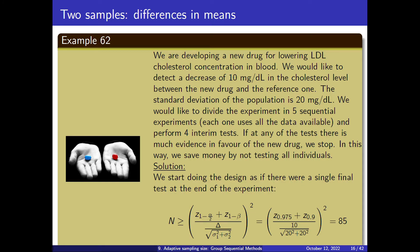Let's say that you are developing a new drug for lowering cholesterol concentration in blood, and we would like to detect a decrease of 10 mg per deciliter in cholesterol level between the new drug and the reference one. The standard deviation of the population is 20 mg per deciliter. We would like to divide the experiment into five sequential experiments, each one using all the data available, and we will perform four interim tests.